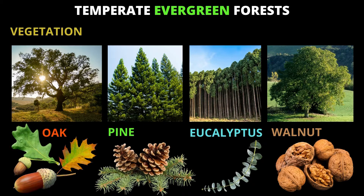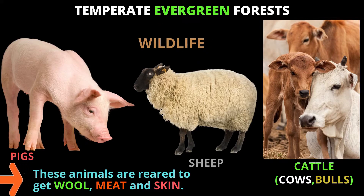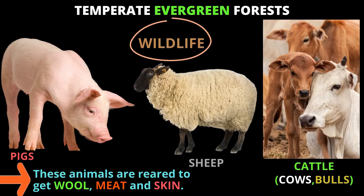The next one — can you see those extremely tall trees? That is the eucalyptus. And can you see the leaf of the eucalyptus? What about the next one? It is a walnut tree. And can you see some nuts below that? That is the edible seed of the walnut tree.